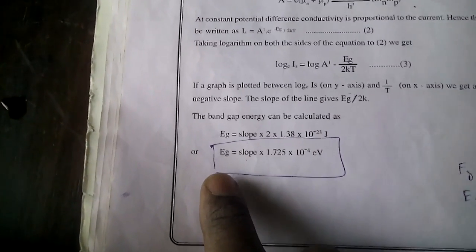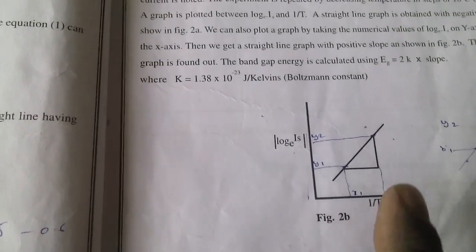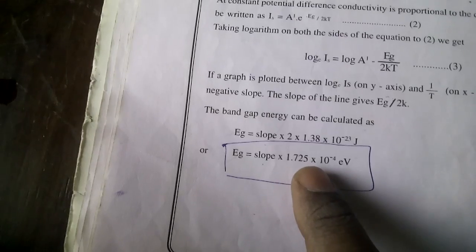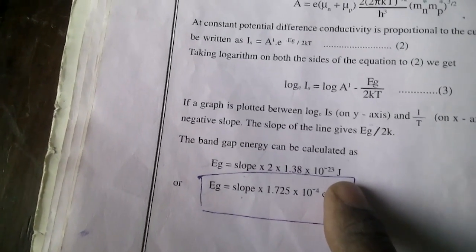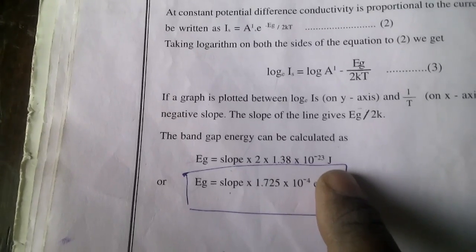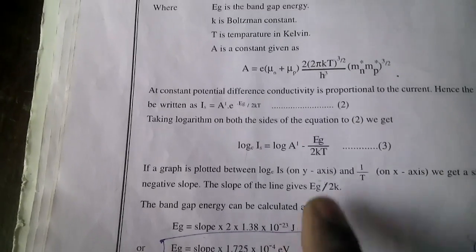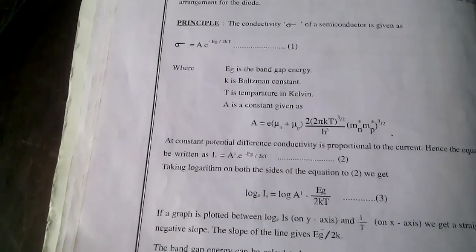The formula we require to find the energy gap is: energy gap equals slope, where the slope is obtained from the graph. The energy gap equals slope multiplied by 1.725 × 10⁻⁴ electron volts. If you want the result in joules, use the corresponding equation.